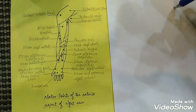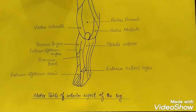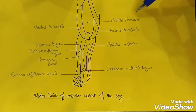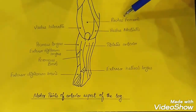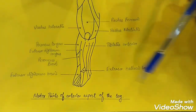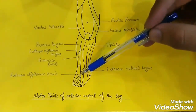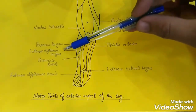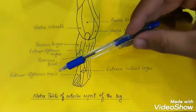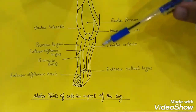Now I will tell you about the motor points of the lower limb. These are the motor points on the anterior aspect of the leg. To memorize the motor points, first you should know about the muscles of that region. Talking about the motor points of the thigh, the first motor point is the rectus femoris, then the vastus lateralis and the vastus medialis. In the leg region, the first motor point is the tibialis anterior, then the lateral motor points: the peroneus longus, the extensor digitorum longus, the peroneus brevis, the extensor digitorum brevis, and the extensor hallucis longus.